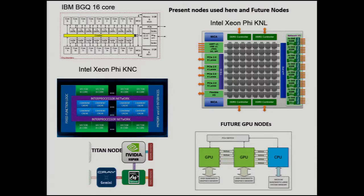To summarize what we've got: Titan with a peak of 27 petaflops, Mira with about 10, moving to Summit which is 8 to 10 times Titan, Aurora eventually with more than 180 petaflops — different communications networks and very different energy requirements, but relatively low increases in the peak power required.